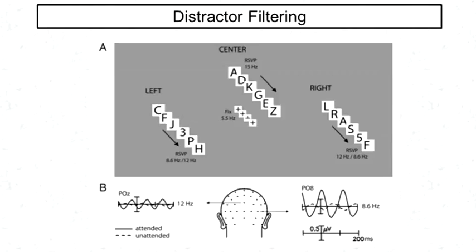Now, the critical manipulation in this task is that the three streams are actually flashing at slightly different frequencies. So for instance, one may be flashing at 8 hertz, one may be flashing at 10 hertz, one may be flashing at 12 hertz.